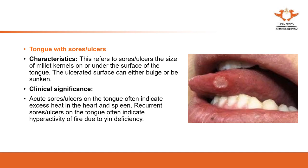The tongue with sores or ulcers — this is quite obvious as patients will feel pain. You can also see the ulcers on the tongue; they can be either bulged or sunken. Ulcers can also indicate either excess heat or deficiency, depending on the color and location of the tongue. On the tip of the tongue it is heart fire; on the side of the tongue it is liver fire; if present in a pale tongue with ulcers, that indicates qi deficiency.